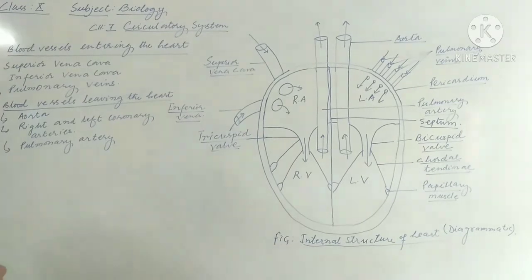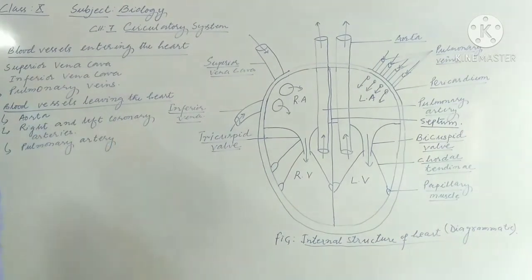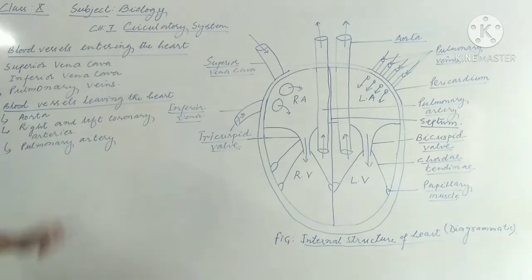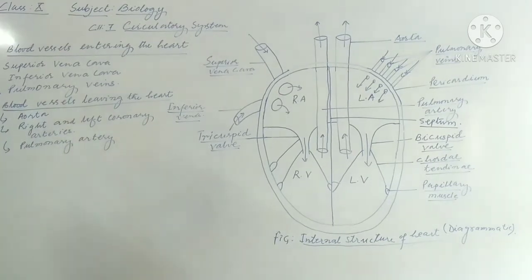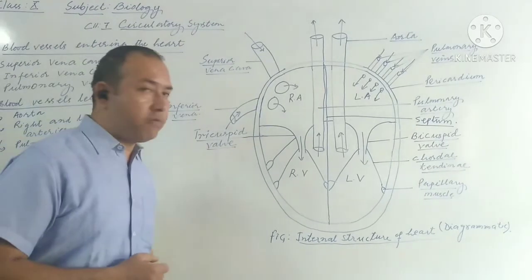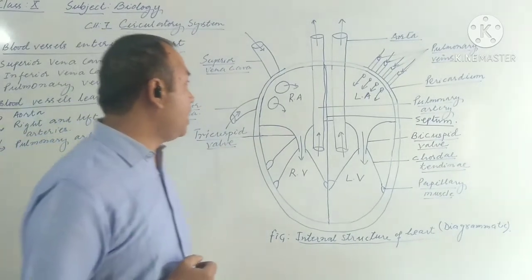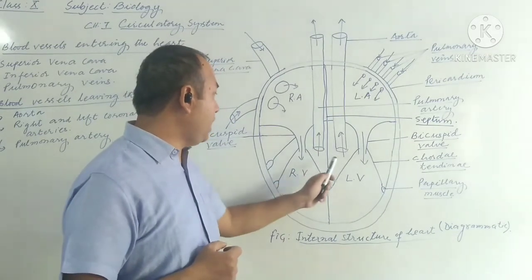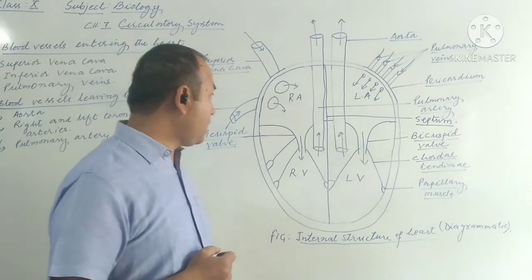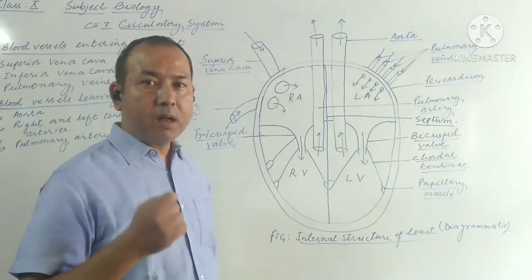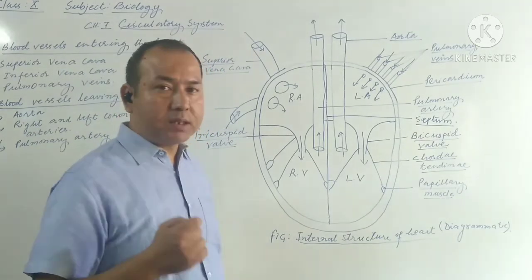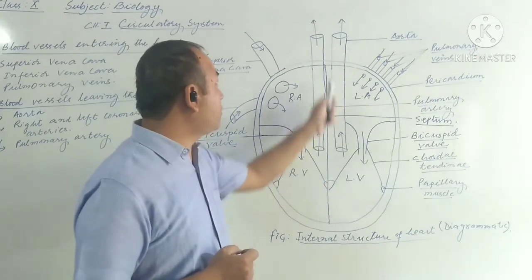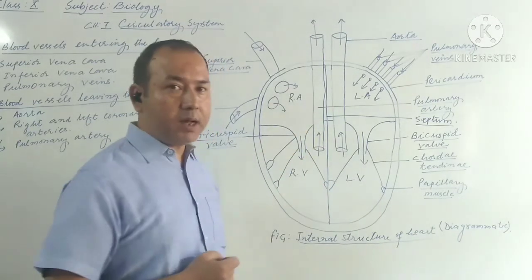Next are the blood vessels leaving the heart: the aorta, right and left coronary arteries, and the pulmonary artery. The aorta is a large artery that emerges from the left ventricle, as you can see in the figure.